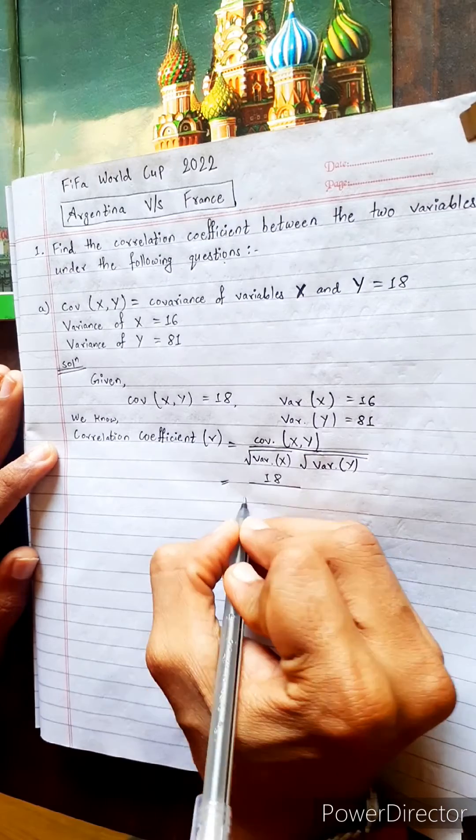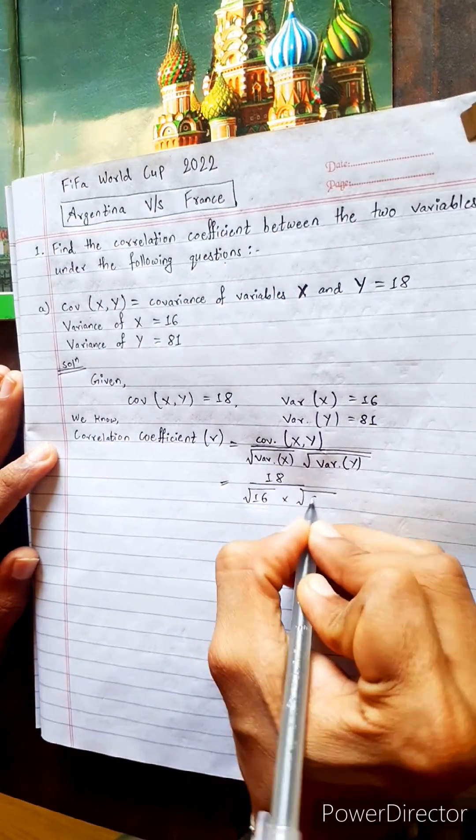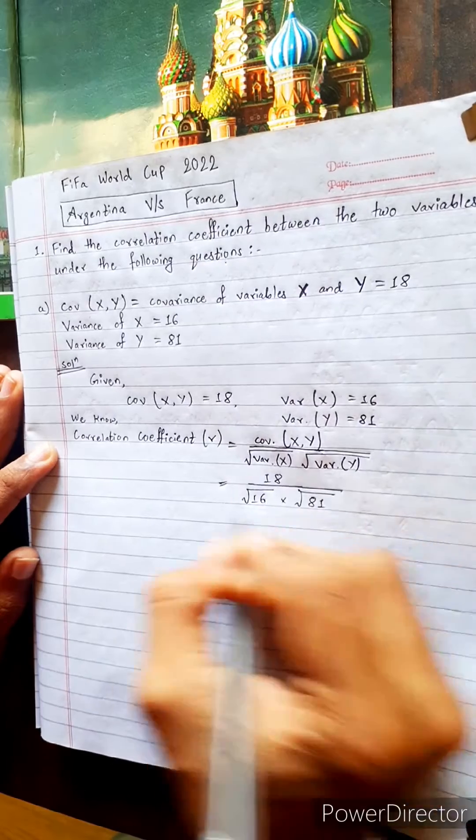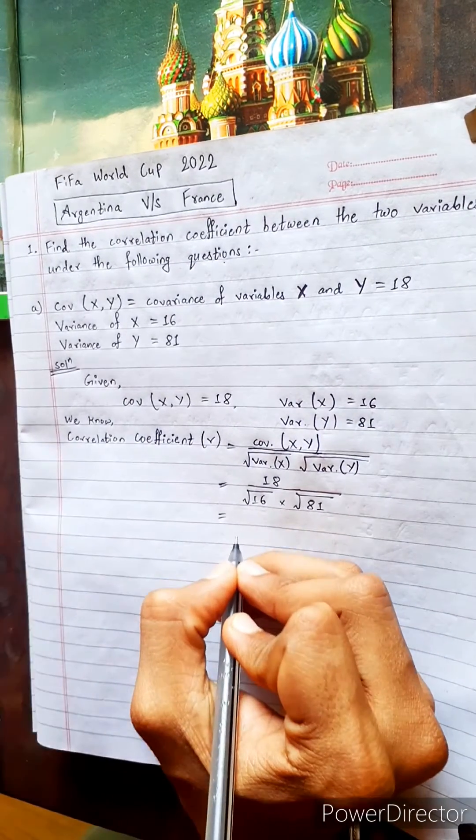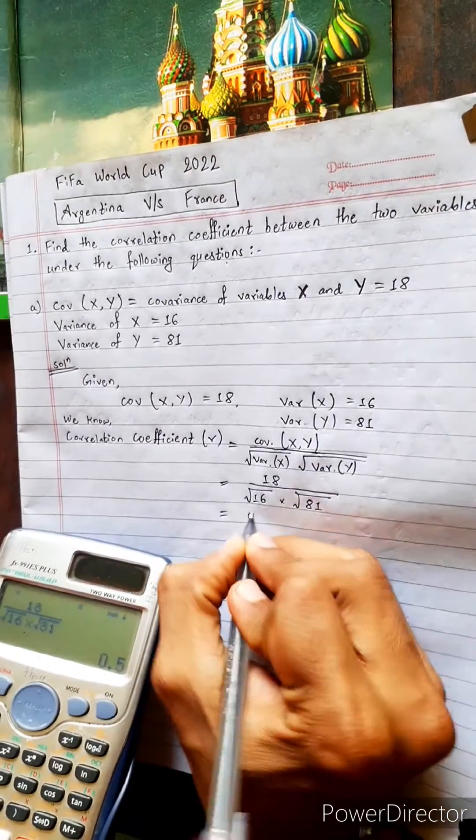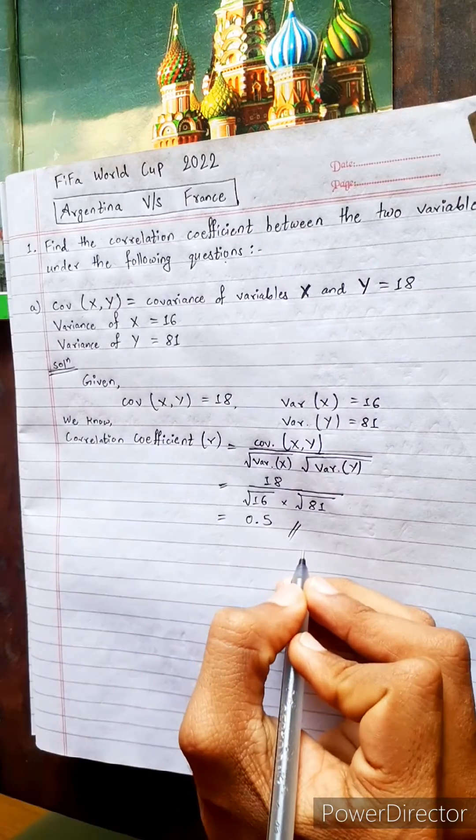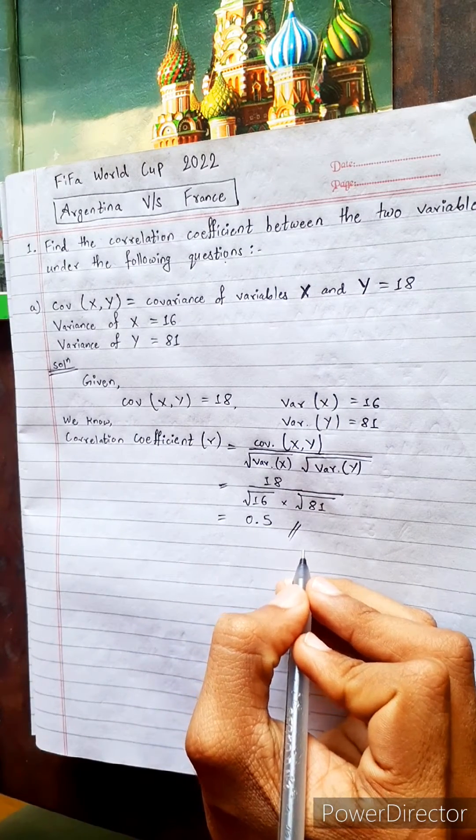Now do like this: 18 divided by the square root of 16 multiplied with the square root of 81. Don't use your mind, use a calculator to save energy and save time. This is 0.5. We got the right answer. Let's check in the book. Yes, it is correct.